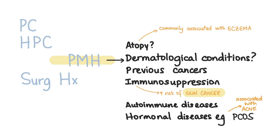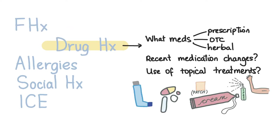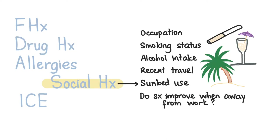Ask about the patient's past medical history and surgical history. You should also inquire specifically about atopic dermatological conditions, previous cancers, immunosuppression like HIV or cancer, autoimmune conditions and hormonal diseases like PCOS. In the family history you especially want to know about any skin cancers, skin conditions and/or autoimmune conditions. In the drug history, ask if the patient has had any recent changes in medications and topical treatments used in the past or currently. The social history should allow you to determine the patient's occupation, whether or not they smoke or drink alcohol and if so how much, recent travel, whether or not they use sunbeds, and importantly whether their symptoms improve when they're away from work.